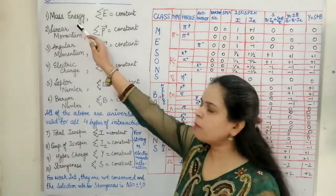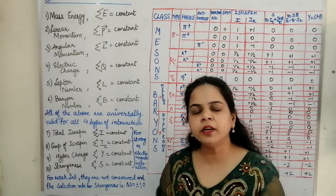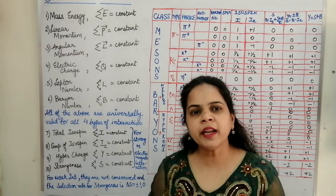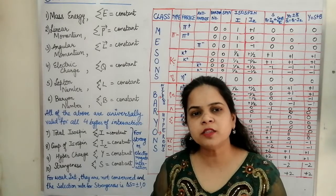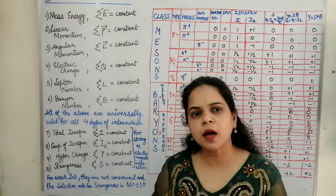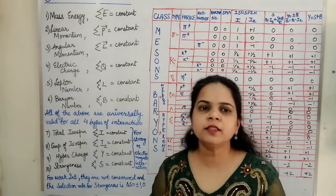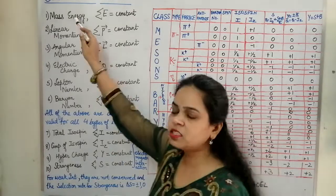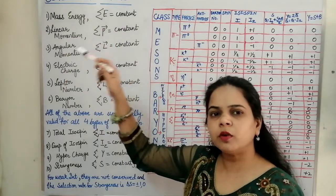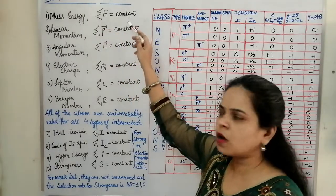The first conservation law is the mass-energy conservation law. Every conservation law means that if we have a decay process or a reaction with reactants and products, the value of the conserved variable must be the same on both sides. For mass-energy conservation, the sum of energy on the reactant side must equal the sum of energy on the product side — that is, the summation of E is constant.